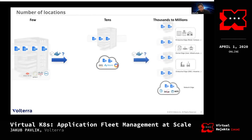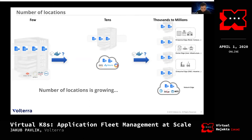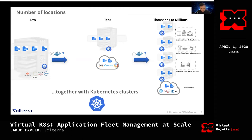If we speak about edge, it goes to thousands or millions. Applications need to run in enterprise edge, retail, automotive, or basically anywhere. That number is significantly growing, and because Kubernetes is the most popular tool and it is getting everywhere, Kubernetes cluster counts are growing too. Going into edge, you can see the movement where people are running Kubernetes at the edges — thousands or millions of clusters which need to run there.